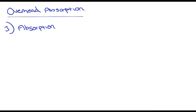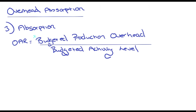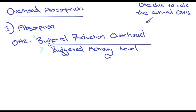What we need to note is that the overhead absorption rate — the budgeted activity level — is calculated using budgeted values. So OAR is calculated using budgeted hours. We can actually apply this to the actual amount of work undertaken during that period to then calculate the overheads that were actually absorbed. You need to learn this formula. Let's do an example.